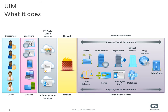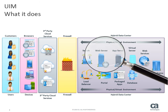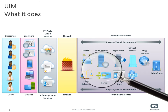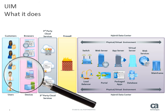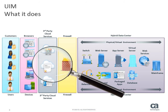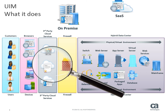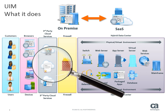No matter how big or complex the technical infrastructure, CA Unified Infrastructure Management proactively monitors and manages the performance and availability of applications, servers, voice and data networks, and databases across physical, virtual, and cloud environments using either an on-premise or SaaS implementation of the software.